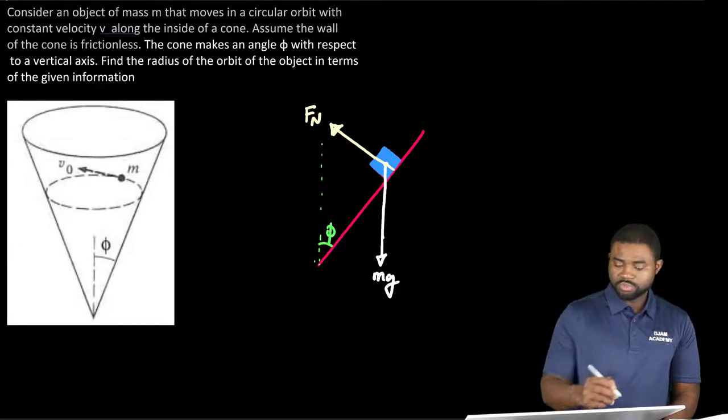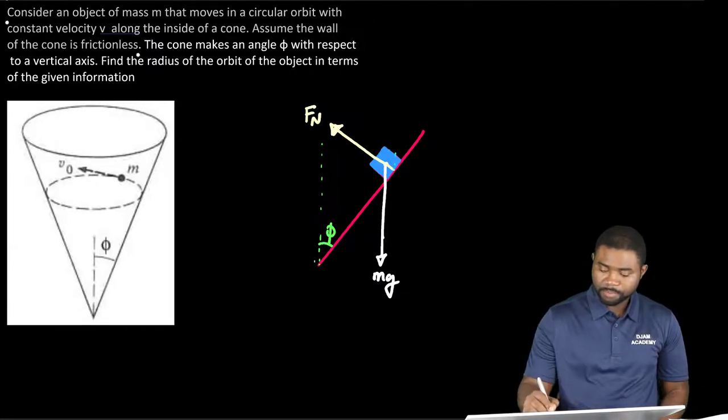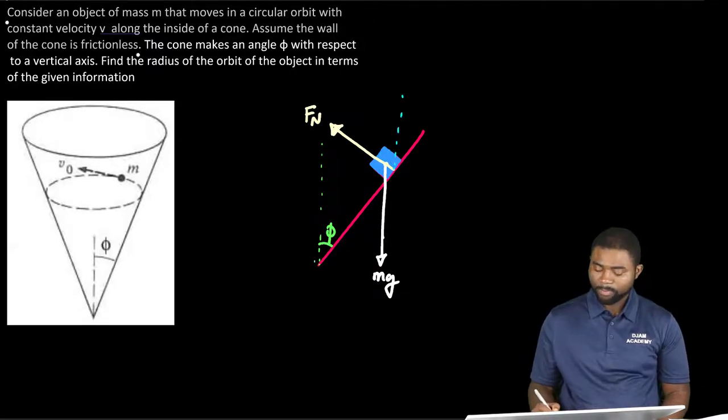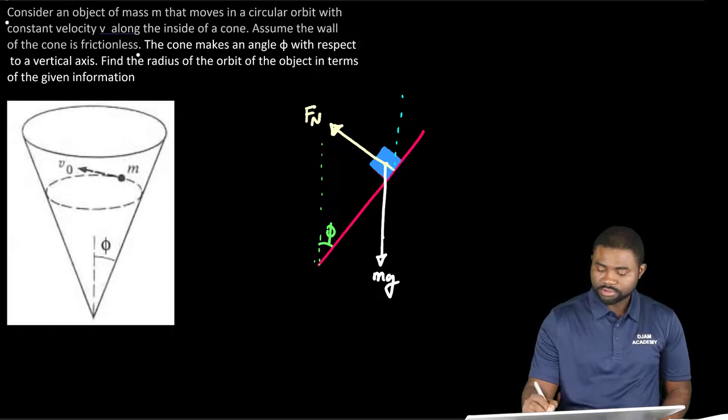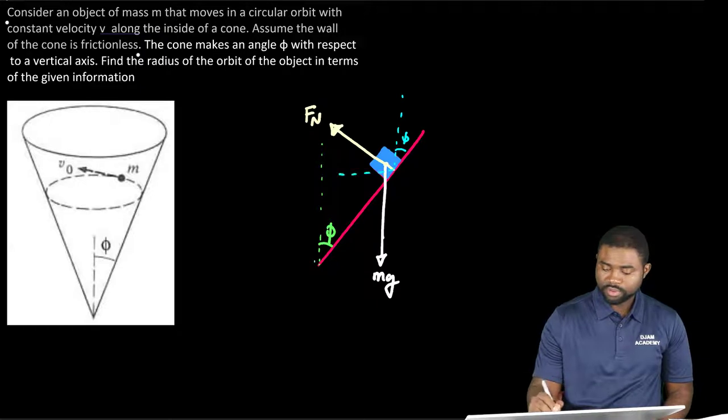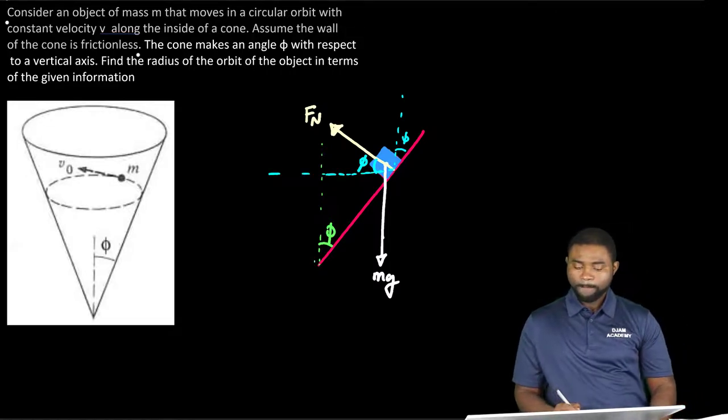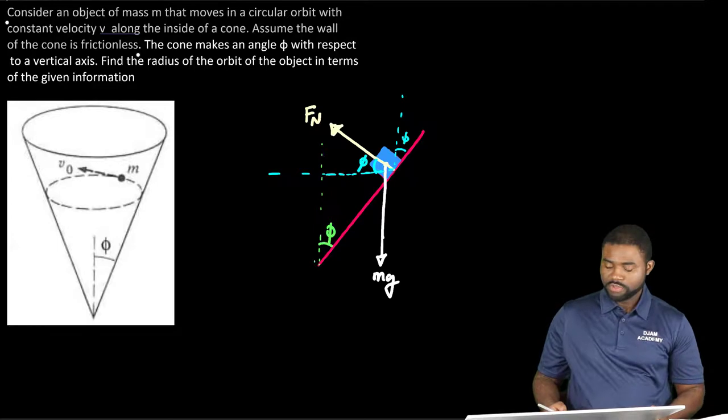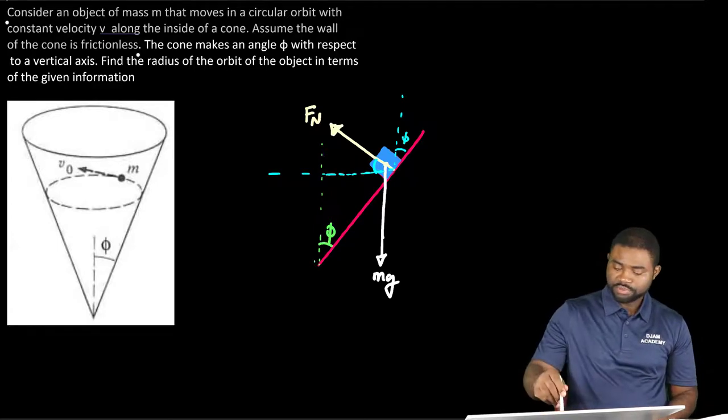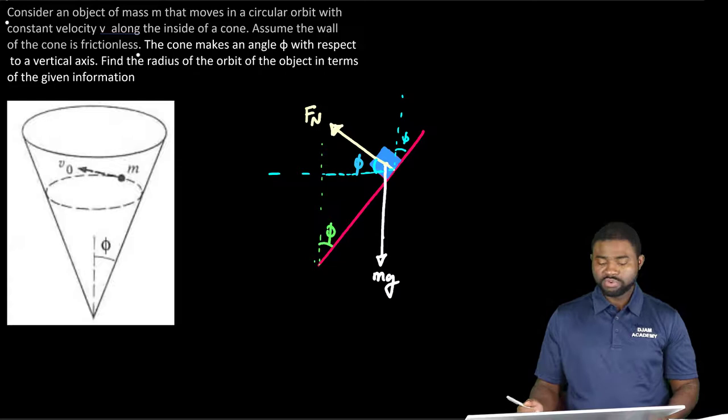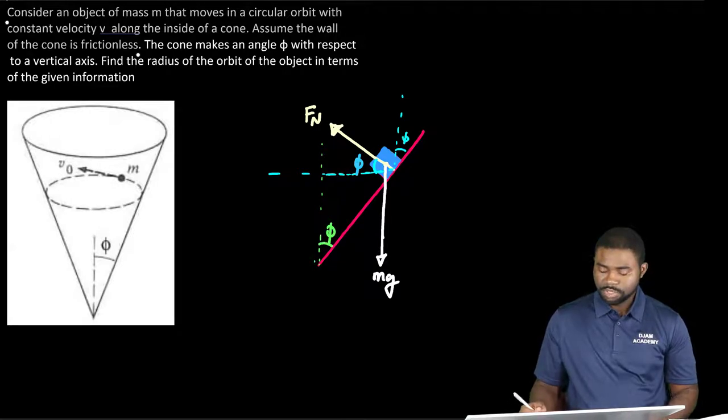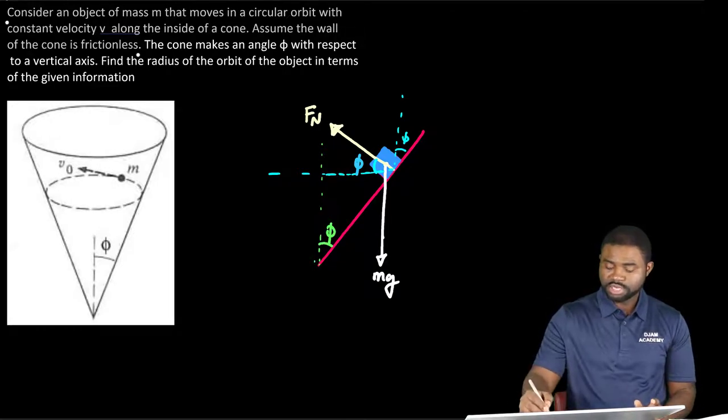Now we need to play around with the angles a little bit. This angle right here is phi, which is equal to that angle right there because of corresponding angles. It's easy to prove that geometrically. You can actually submit this to earn extra credit. But it's pretty straightforward to prove geometrically that this angle is equal to this angle which is equal to that angle.